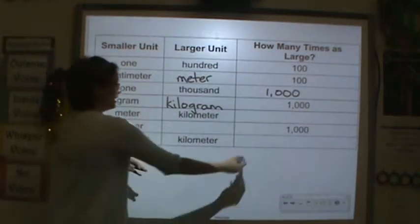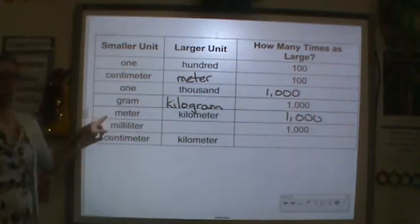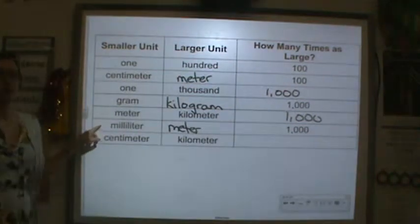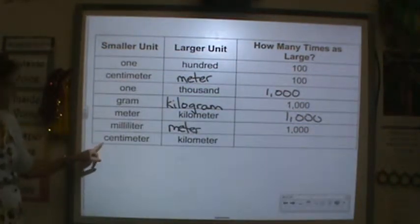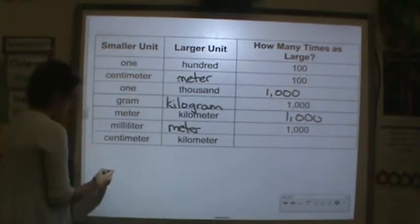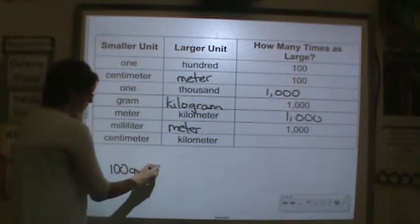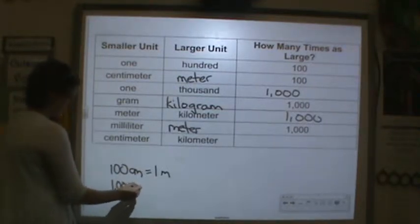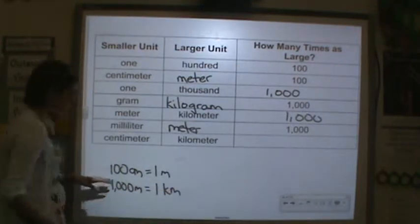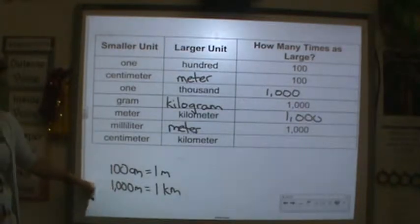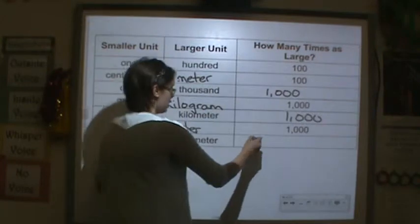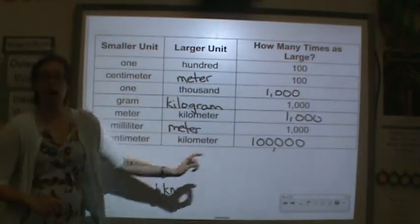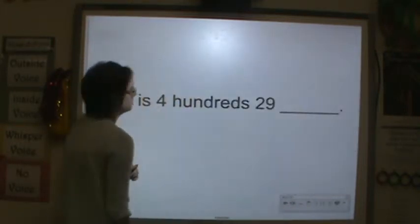A kilometer is 1,000 times larger than a meter, and a meter is 1,000 times larger than a millimeter. Now here's where we're going to get tricky. To go from a centimeter to a meter, we have 100 centimeters equal to 1 meter. And we have 1,000 meters equal to 1 kilometer. We have to put these two numbers together - how many zeros is that? 1, 2, 3, 4, 5. So a kilometer is 100,000 times bigger than a centimeter.